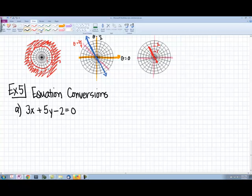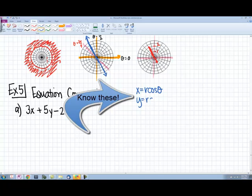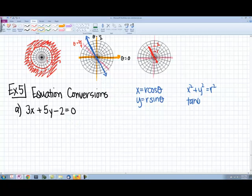Our conversions that we use: x equals r cosine theta, y equals r sine theta, x squared plus y squared equals r squared, tangent theta equals y over x.